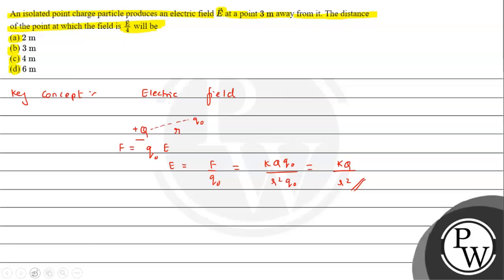So using this result, we will try to answer the question. Here we can see k and Q for a particular charge will be a fixed value. So we can say E1 upon E2 will be equal to r2 upon r1 the whole square, right?